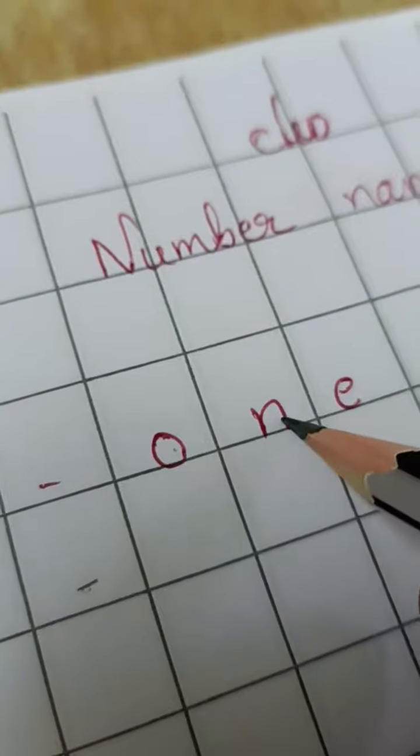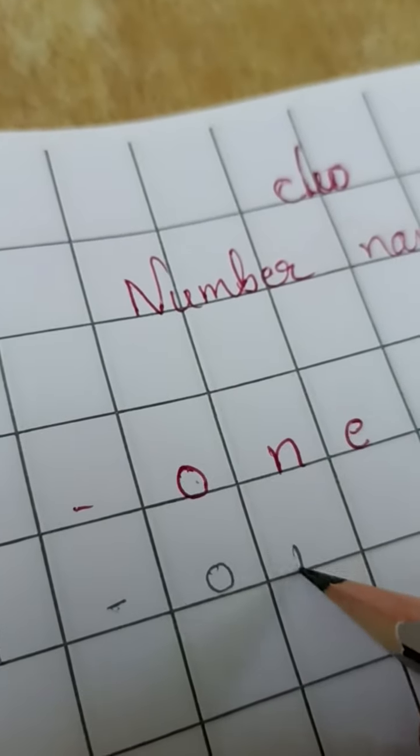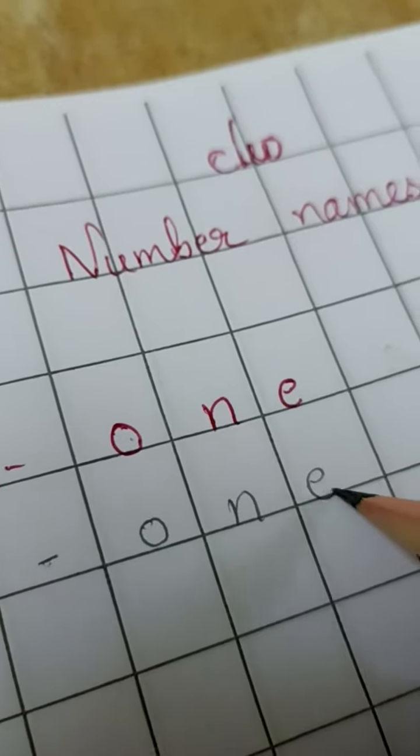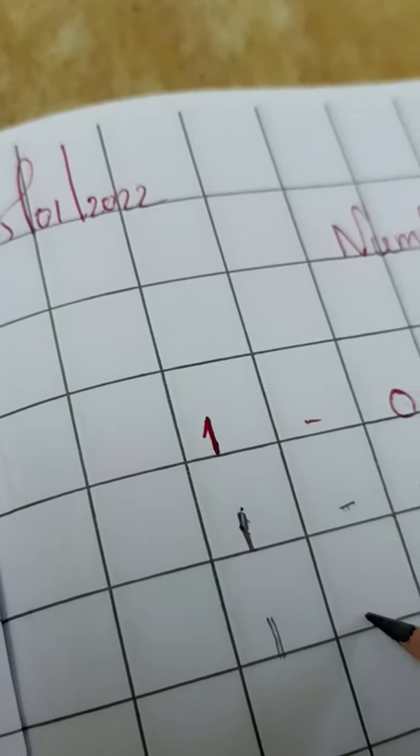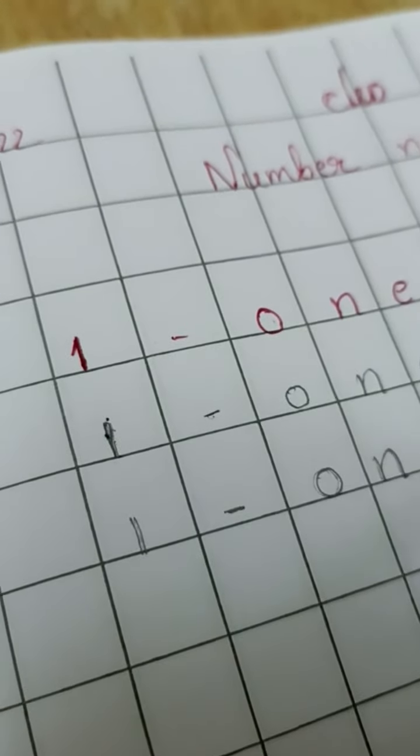And write here O-N-E-1. Right here O-N-E-1. Okay? Now write again. Don't leave box. Write, say and write O-N-E-1.